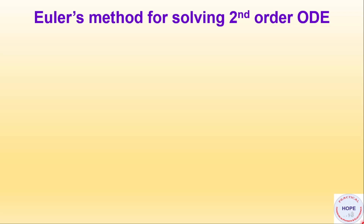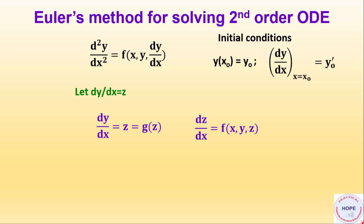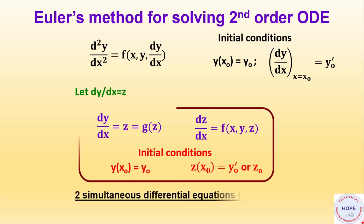Next, Euler's method for solving a second-order ODE. Given a second-order differential equation with initial conditions, let dy/dx = z, so dy/dx = z (function g) and dz/dx = f(x, y, z). This reduces the second-order ODE to two simultaneous first-order differential equations, with corresponding initial conditions.